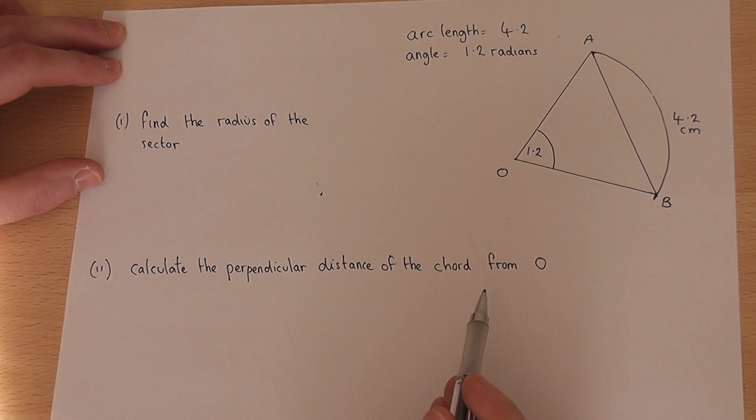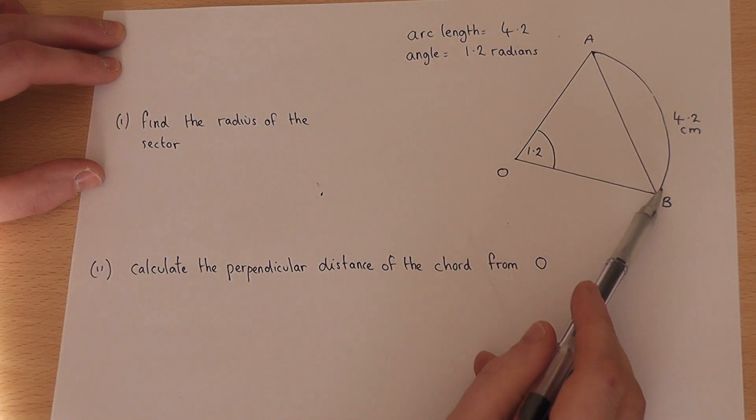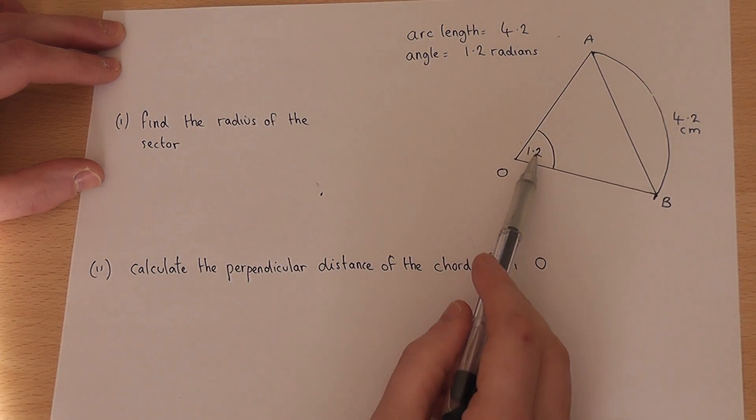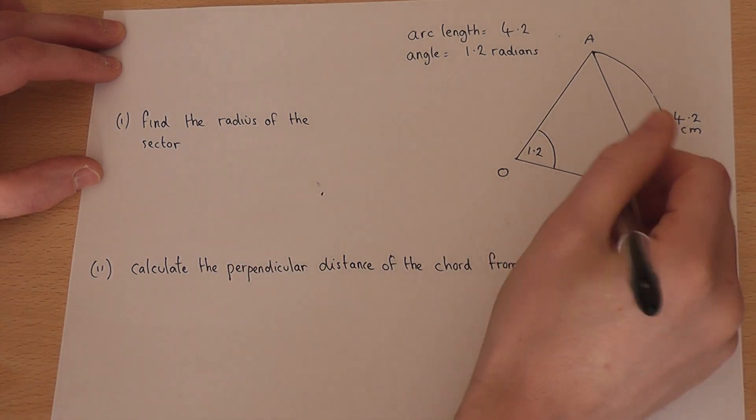In this question we have a sector with an arc length of 4.2cm and an angle of 1.2 radians, and in part one we're asked to find the radius of the sector.